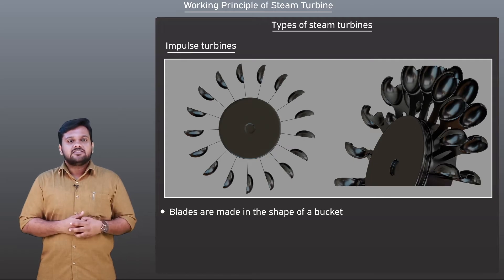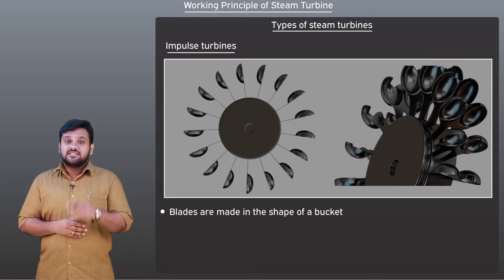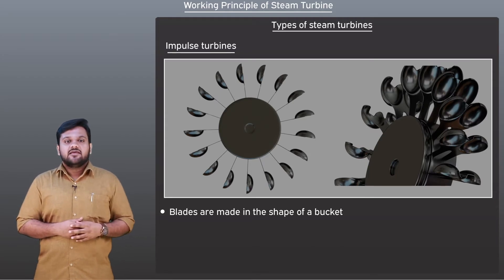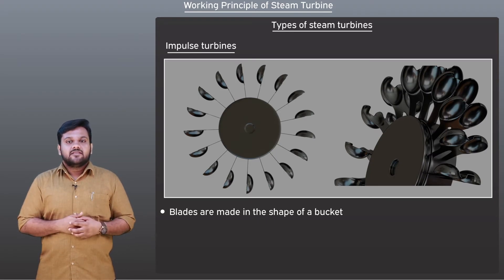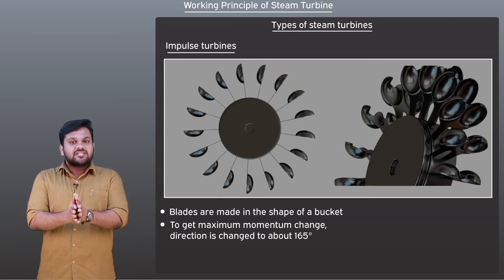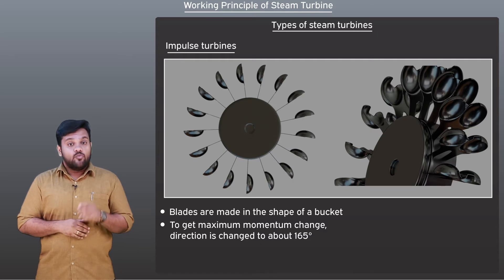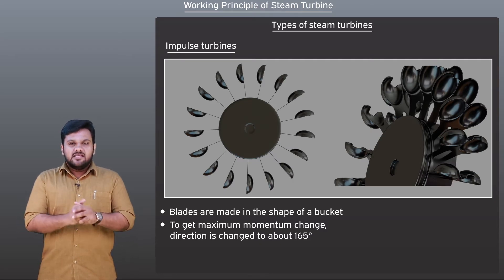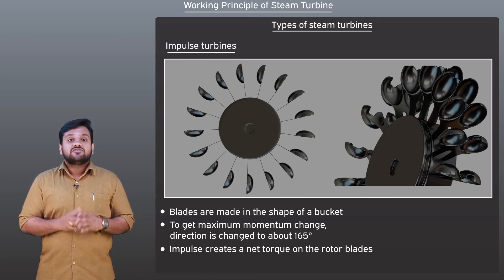The high velocity steam from the nozzle hits the turbine blade and changes direction. This change in direction is connected with the change in the momentum of the steam exiting the blade. To get maximum momentum change, the direction is changed to about 165 degrees. This change in momentum is called an impulse, which is experienced by the blades, creating a net torque on the rotor blades which rotates them.